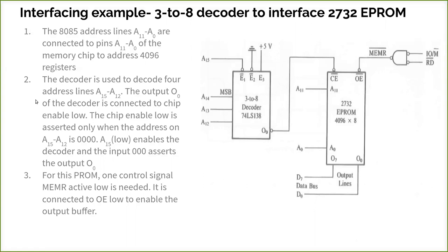So 4096 into 8 - that much memory chip I can connect. That is, expand the capacity. The decoder is used to decode 4 address lines using 3-to-8 decoder, and the output of the decoder is connected to the chip enable. The chip is enabled only when the address lines A13, A14, A15 are 0. When you give 0 it is converted into 1, and this 3-to-8 decoder will be selected.